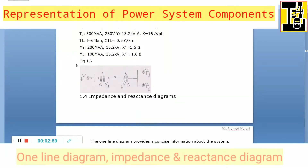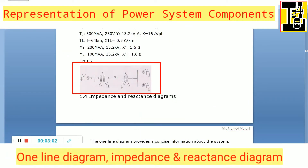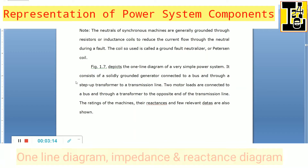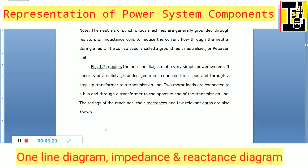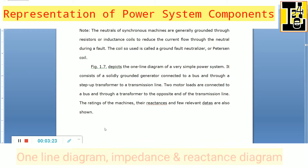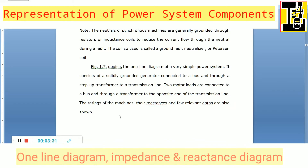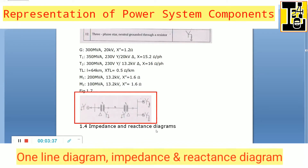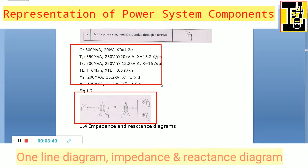This one line diagram shows a simple power system consisting of a solidly grounded neutral connected to a bus and through a step-up transformer to a transmission line. Two motor loads are connected to a bus and through a transformer to a transmission line at the opposite end. The ratings of the machines, the reactances, and relevant data are shown here.